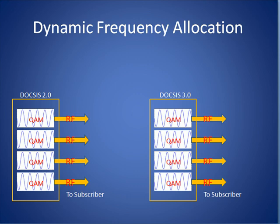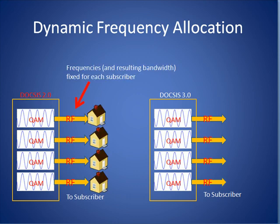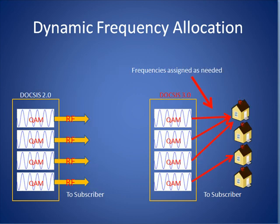We will now describe how dynamic frequency allocation works in conjunction with channel bonding to increase upstream and downstream speeds in a DOCSIS 3.0 system. In older DOCSIS standards, frequencies and the resulting bandwidth from a CMTS are fixed for each subscriber. That means each home has a specific frequency and a specific amount of bandwidth on that frequency dedicated to it. In contrast, in a DOCSIS 3.0 system, frequencies are assigned as needed, allowing large amounts of bandwidth to be provided to a home for brief periods whenever the need arises.